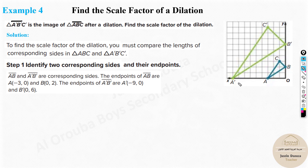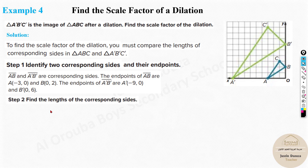We consider corresponding sides AB and A'B'. From the figure, A is at (−3, 0) and B is at (0, 2). For A'B', A' is at (−9, 0) and B' is at (0, 6). It's useful to pick points on the axes because having a zero coordinate makes calculations easier. Now apply the distance formula: √[(x₂ − x₁)² + (y₂ − y₁)²] to find the lengths of each side.